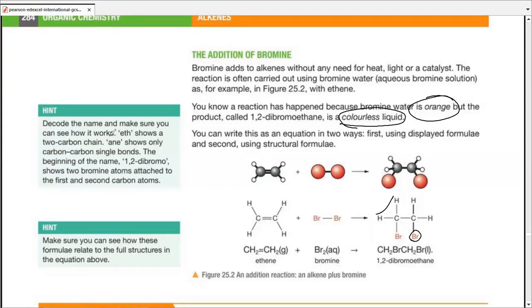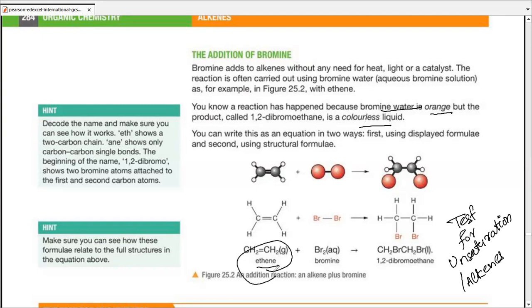Let's go through the hints. Decode the name and make sure you see how it works. I've already worked it out for you, so you understand what the decoding means. Now, make sure how these formula relate to the full structures in the equation above. So make sure you understand these formulas, as well as condensed structures and structural formulas, so it's easier for you to convert the one into other. Now, this reaction is actually used as a test for unsaturation, or we may also call it as a test for alkenes. Test for alkenes how? You have an unknown alkene with you, and you're not even sure whether that's an alkene or that's an alkane. Pass it through bromine water. If the color changes from orange to colorless, it's an alkene. If the color does not change, it's an alkane. That's why we call it a test.